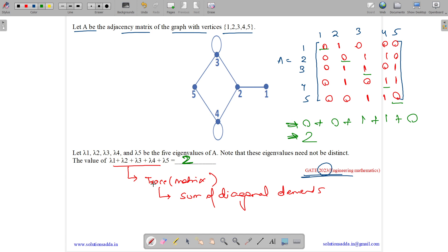There is a shortcut to this. See, sum of diagonal elements is equal to trace of matrix. Now a diagonal element will be 1 only when we have a self loop.